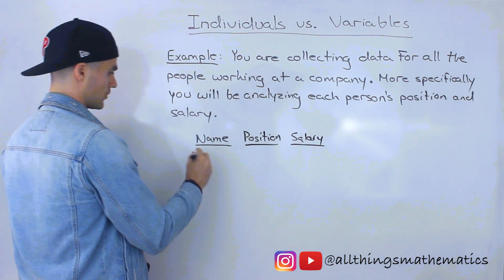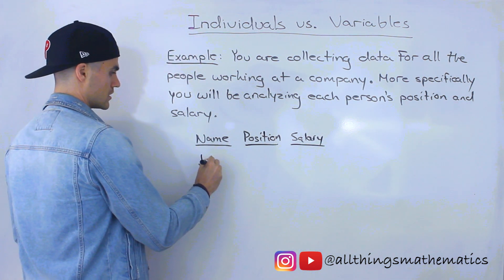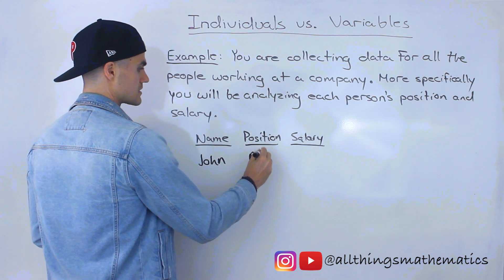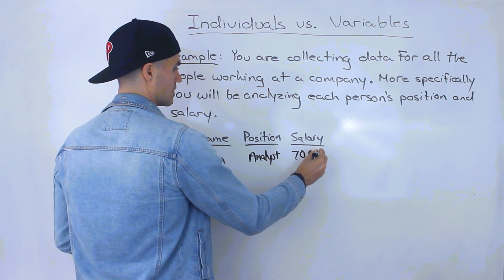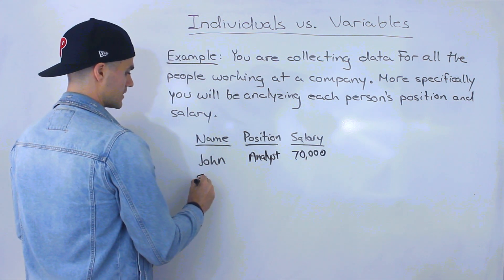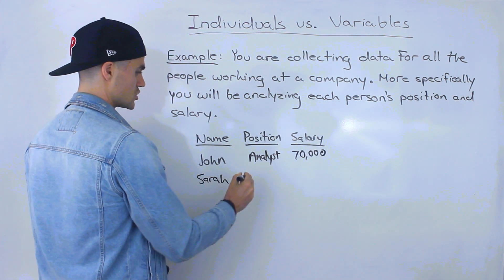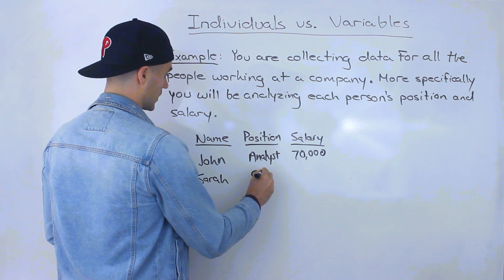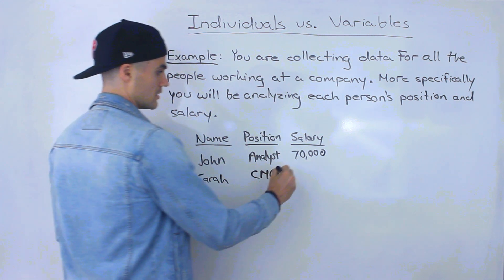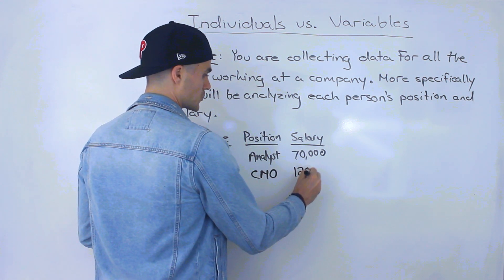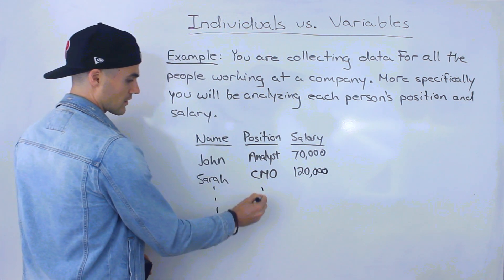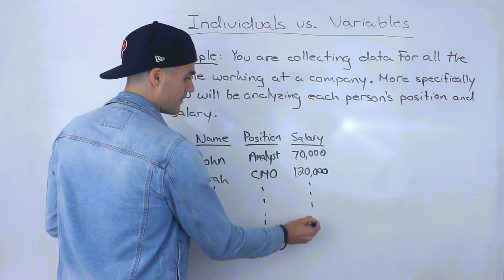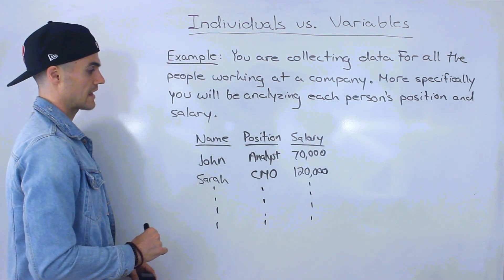So for example let's say John is an analyst. Let's say he makes $70,000 a year. And then we run into Sarah. Let's say she is the chief marketing officer. So let's say she's making $120,000. So you're going to go to all the employees, get their positions, and then get their respective salary.